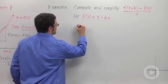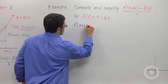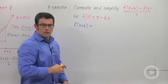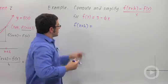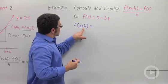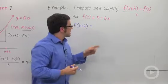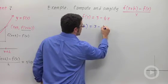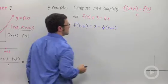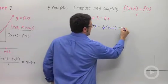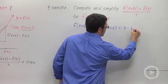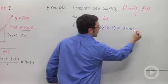We start with f of x plus h. Just a little exercise with function notation. f of x plus h is going to be f of x with x plus h plugged in for x. So 3 minus 1 quarter of x plus h. And that's going to be 3 minus 1 quarter x minus 1 quarter h.